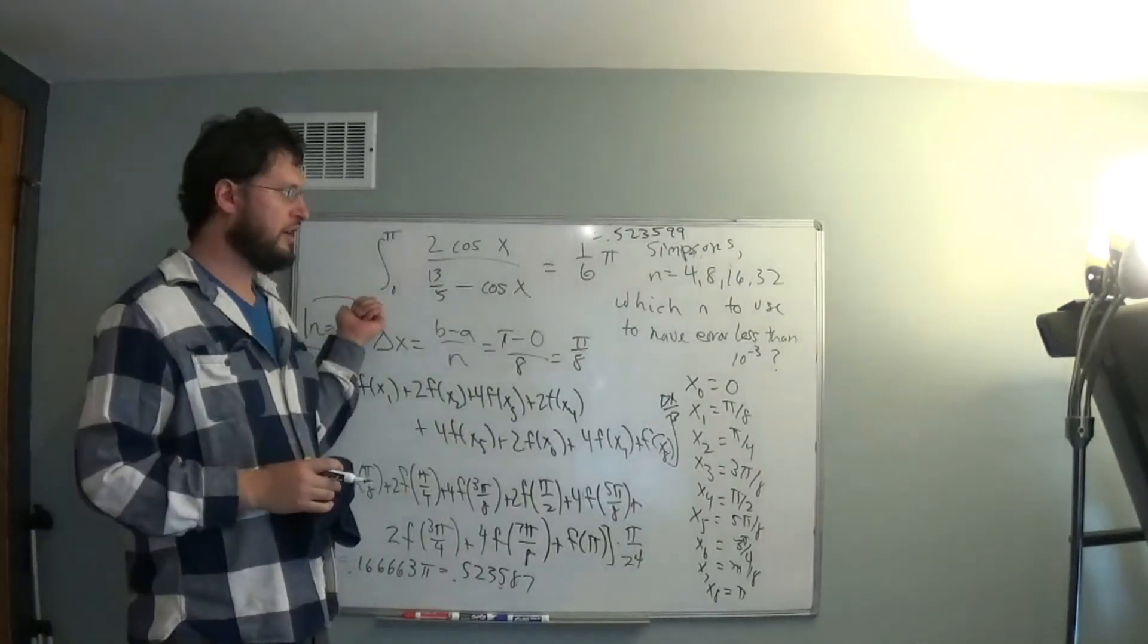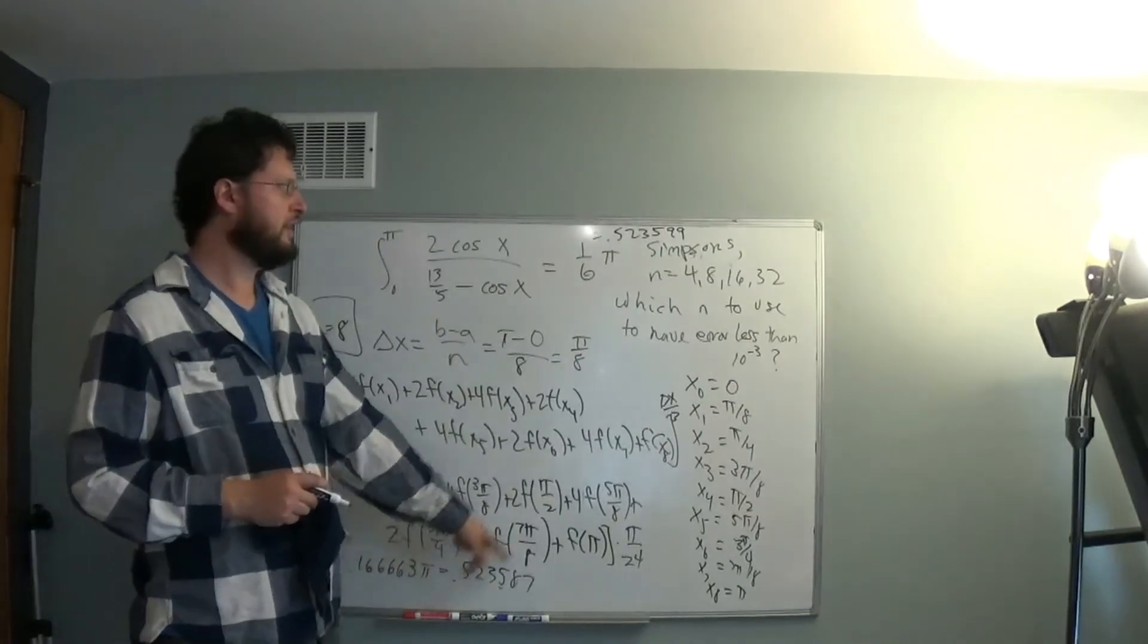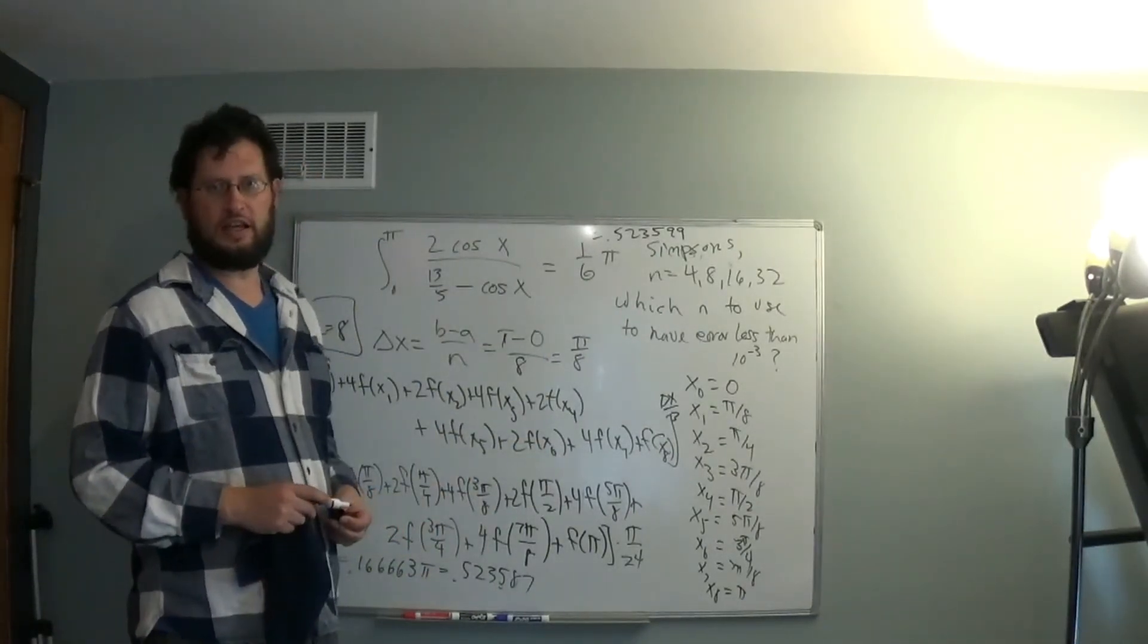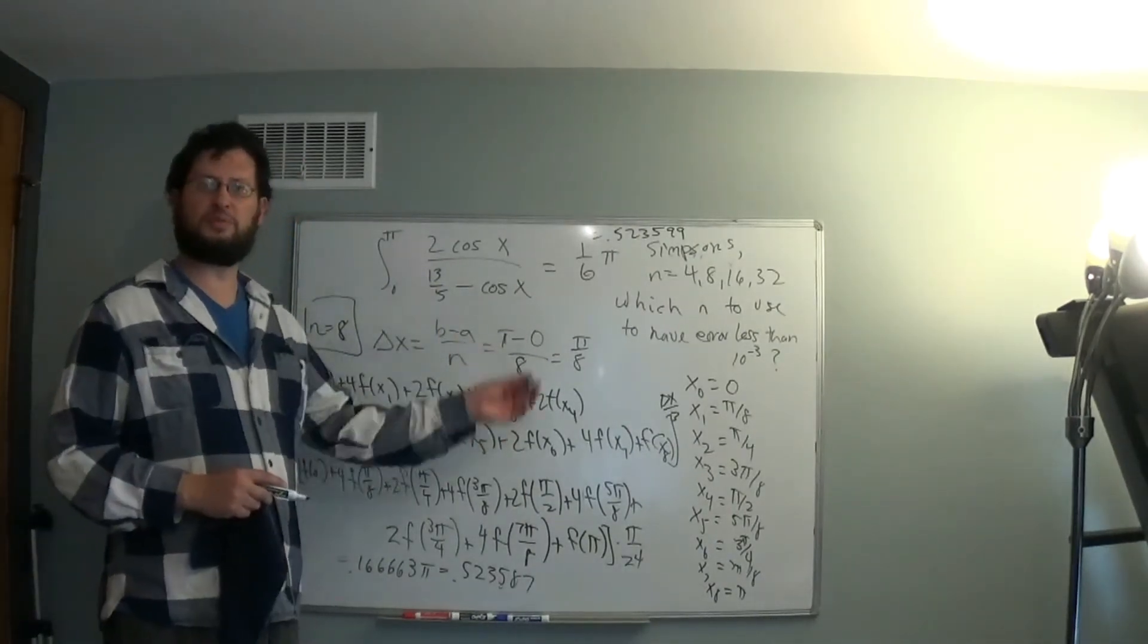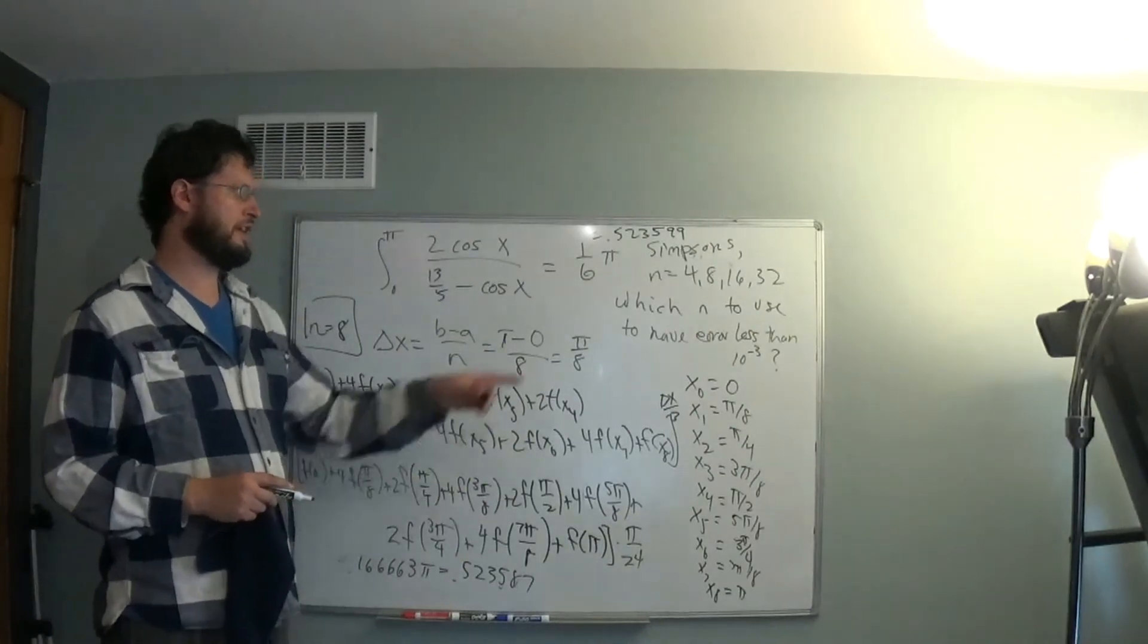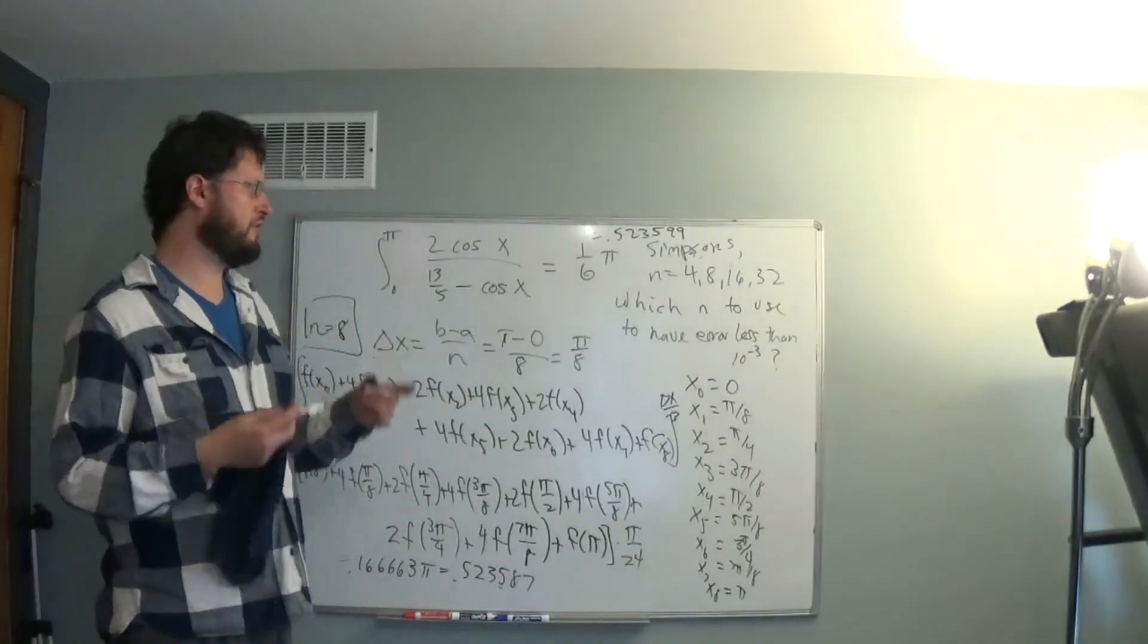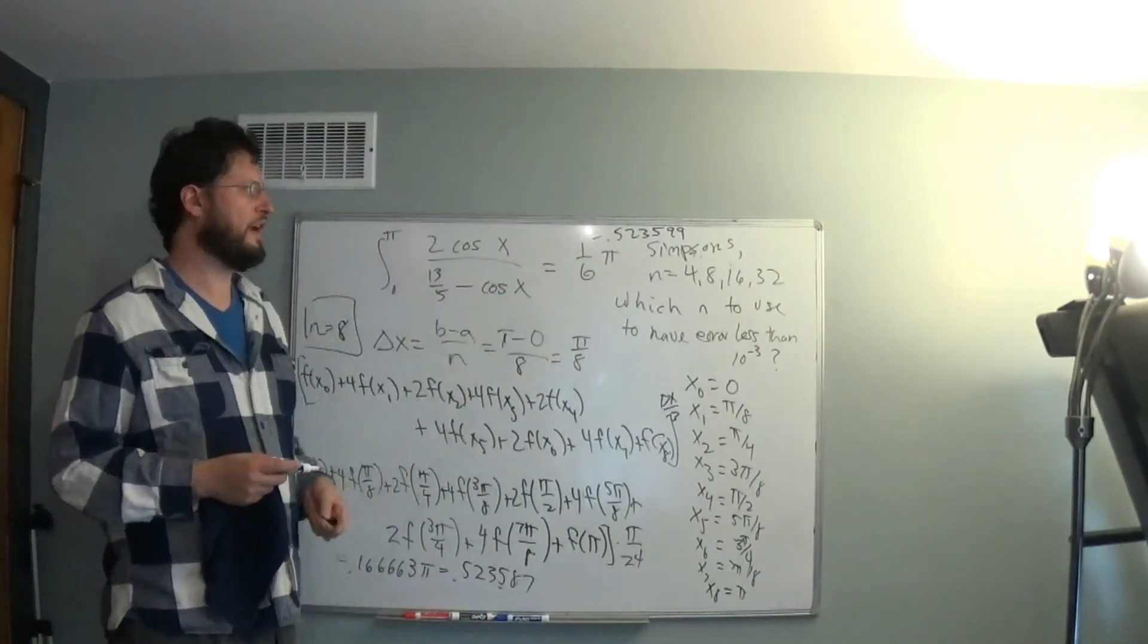If that didn't work then we'd have to go to n equals 16, evaluate this, find the difference and hope that it's also less than 10 to the negative 3. This does two things. This illustrates the process for using Simpson's rule and the second idea of using it to measure the error between the use of the numerical approximation and the actual value.